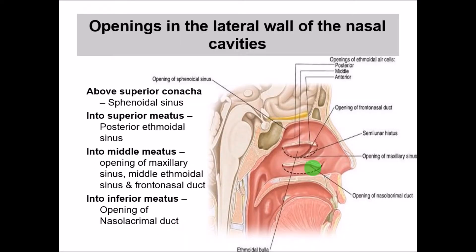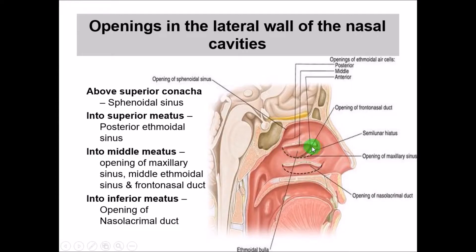Coming to the openings in the lateral wall of the nasal cavity: above the superior concha there is the opening of the sphenoidal sinus. Below the superior concha, into the superior meatus, there is the opening of the posterior ethmoidal sinus. Into the middle meatus there are very important openings. There is an ethmoidal bulla due to the ethmoidal sinus, which is elevated. Below the ethmoidal bulla is a semicircular structure called the hiatus semilunaris, where the maxillary sinus opens, along with the middle ethmoidal sinus and the frontonasal duct. Into the inferior meatus is the opening of the nasolacrimal duct.